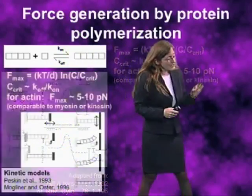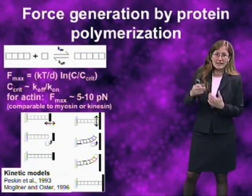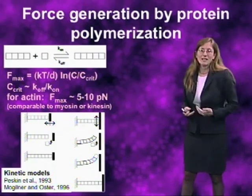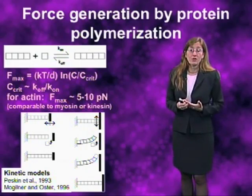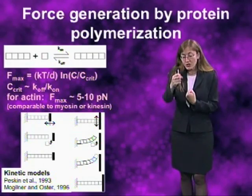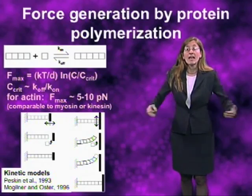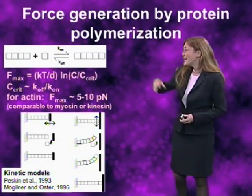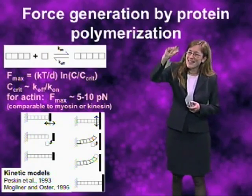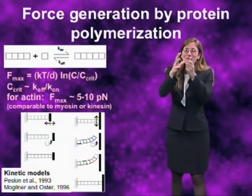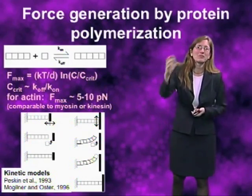Now, this thermodynamic argument can tell us how much force can be generated by the assembly of an actin filament, but it can't tell us anything about how fast that's going to happen. And of course, for this force to be useful to a eukaryotic cell, it has to not just generate an appropriate amount of force, but it has to also generate in the right place, at the right time, and fast enough to be useful. And thinking back to that movie of the neutrophil, you can see in order for that thing to crawl along — imagining how small the individual actin filaments are in the context of that enormous neutrophil cell — this obviously has to be happening with blazing speed.